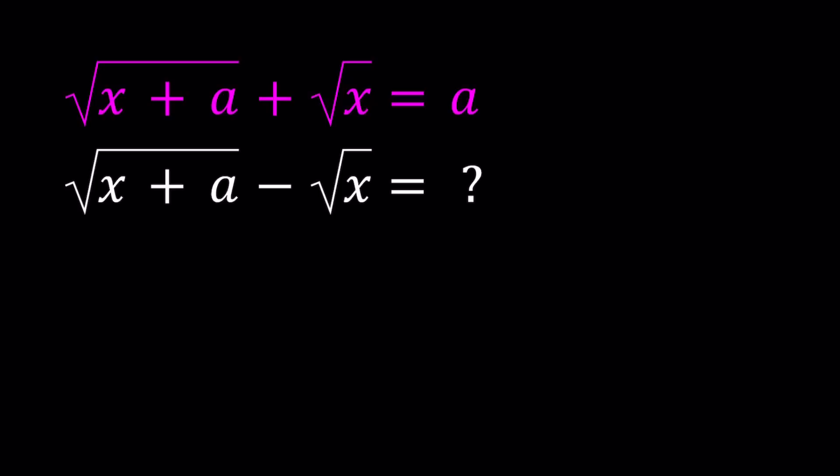We are given square root of x plus a plus the square root of x equals a. a is just a parameter. And we need to find the value of the square root of x plus a minus the square root of x.